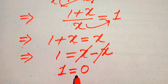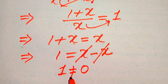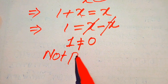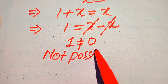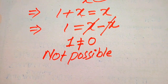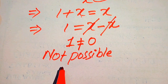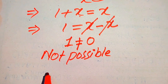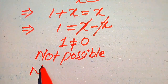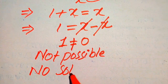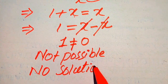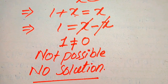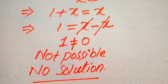Since 1 is not equal to 0, this is not possible, meaning we cannot get any value of x from here. The final conclusion is that the given equation has no solution. This is our final answer. Thank you so much for watching this video. Please subscribe to my channel for more exciting videos.